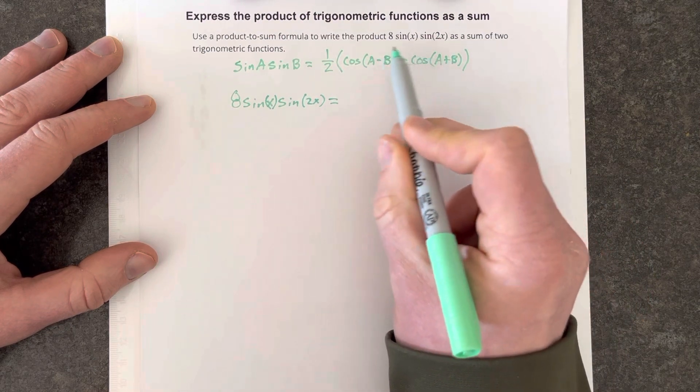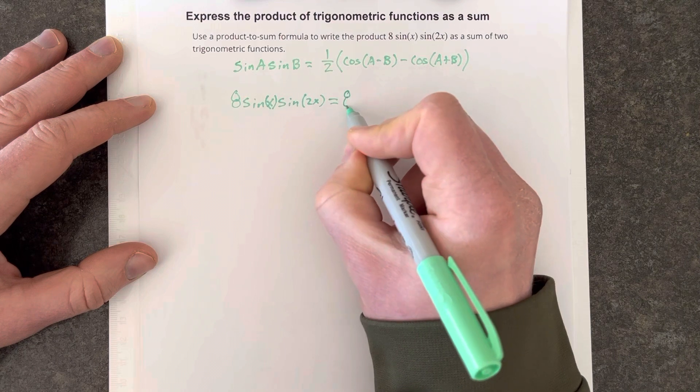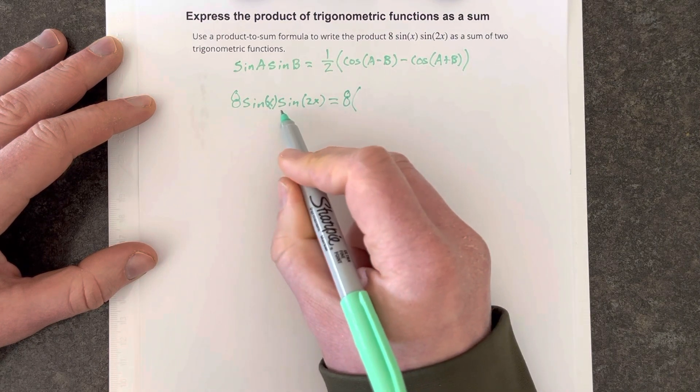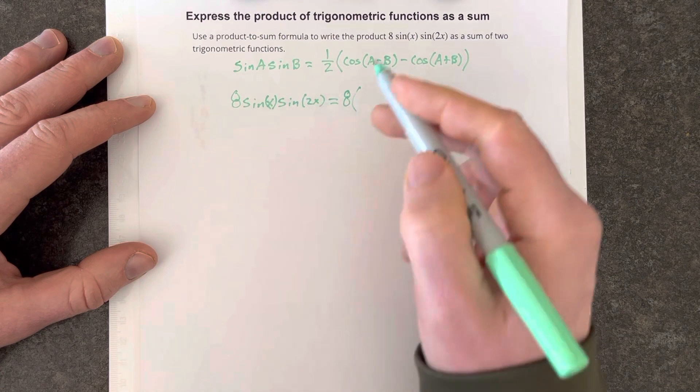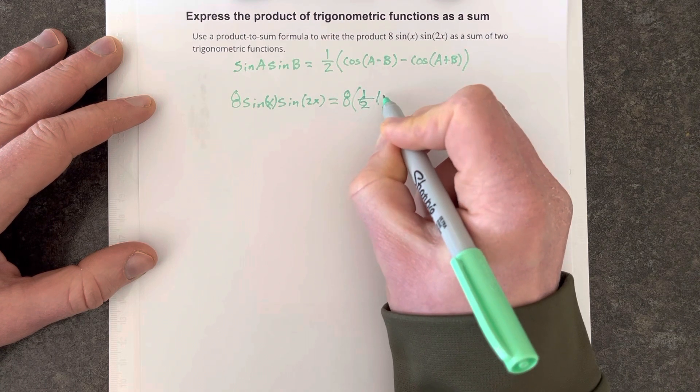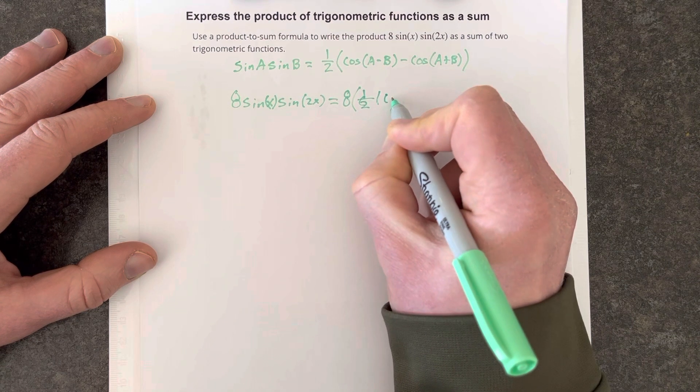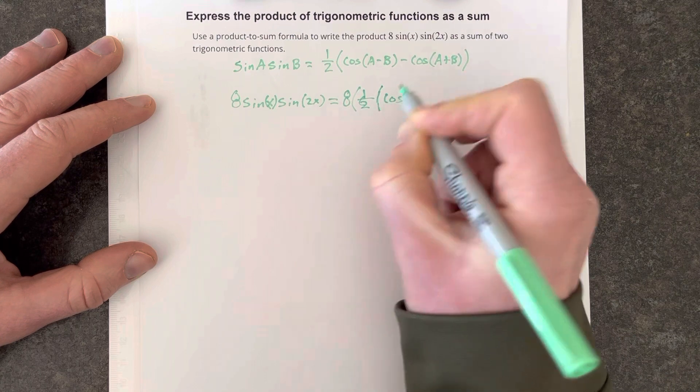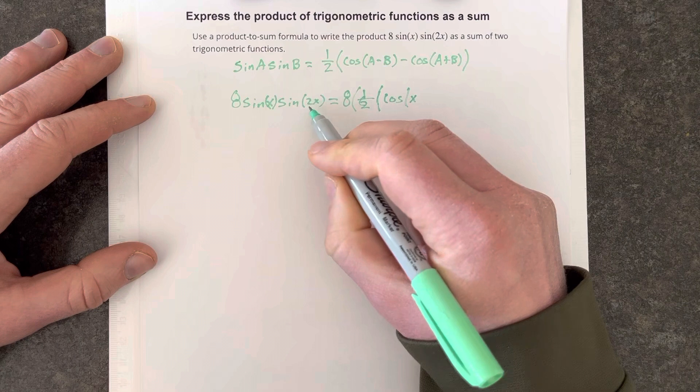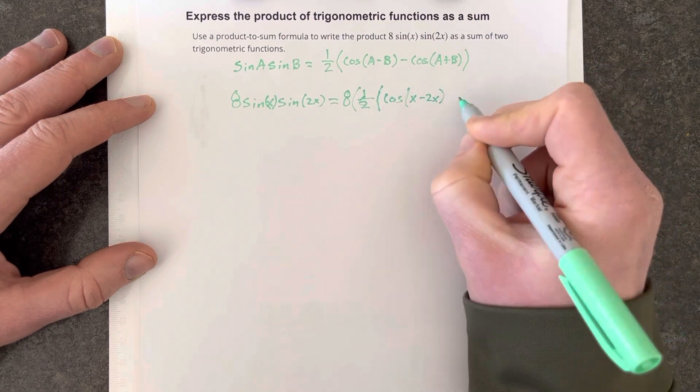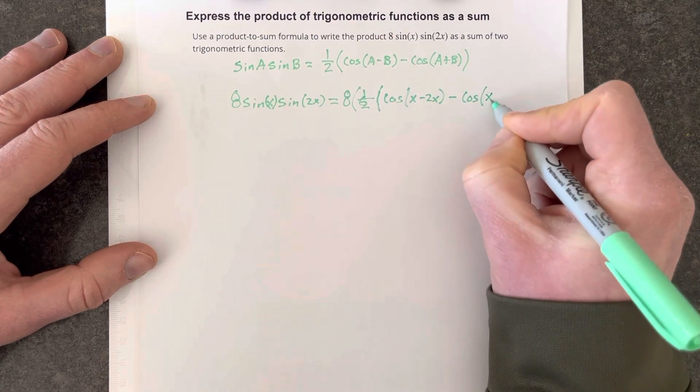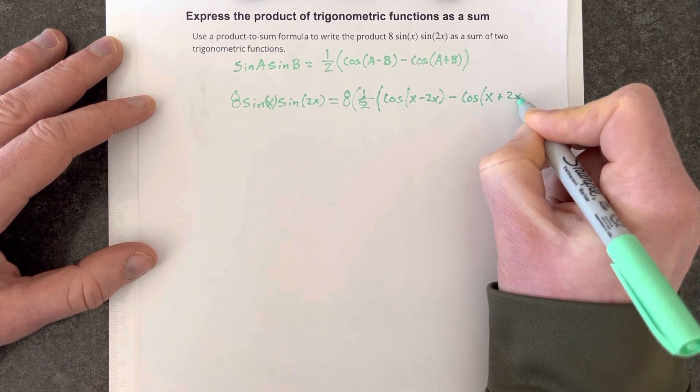and we'll start to use this formula with 8 just being on the outside as the leading coefficient. So we're going to say that 8 times one-half, when we plug this formula in, we would use a and b. So we'd say cosine of a, which was x, minus b, which is 2x, minus cosine of a, which is x, plus b, which is 2x.